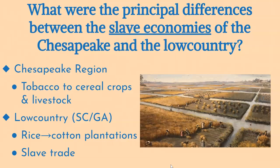The slave economies of the Chesapeake and the Lowcountry regions of South Carolina and Georgia developed along different lines due to the nature of the crops each region produced and the shifting demands of international markets. In the Chesapeake, tobacco dominated the agricultural economy up until the 1790s. However, by the time of the American Revolution, the market for tobacco had begun to decline, and this downward trend continued into the post-revolutionary period.